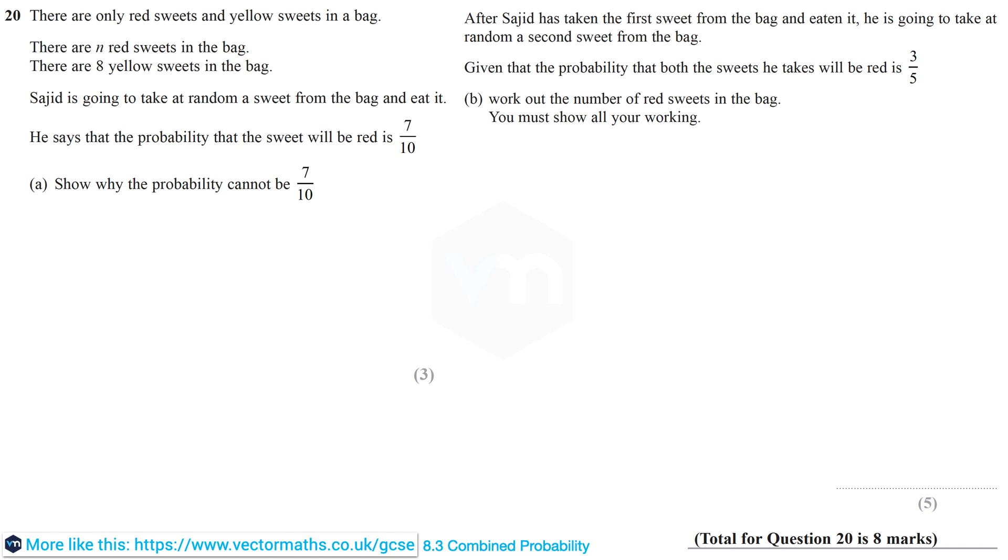Sajid is going to take at random a sweet from the bag and eat it, and he says that the probability that the sweet will be red is 7 over 10. And in part A we need to show why the probability cannot be 7 over 10.